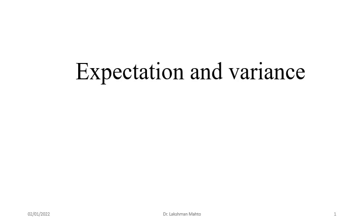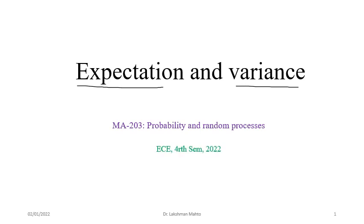In this lecture, we will discuss in detail about expectation and variance of a random variable. A random variable is a function that maps outcomes to real numbers, which we had already discussed. We also discussed function of a random variable and various discrete random variables. Today we will discuss in detail how to find a representation of various possible values of a random variable through expectation, and the variability of those values through variance.